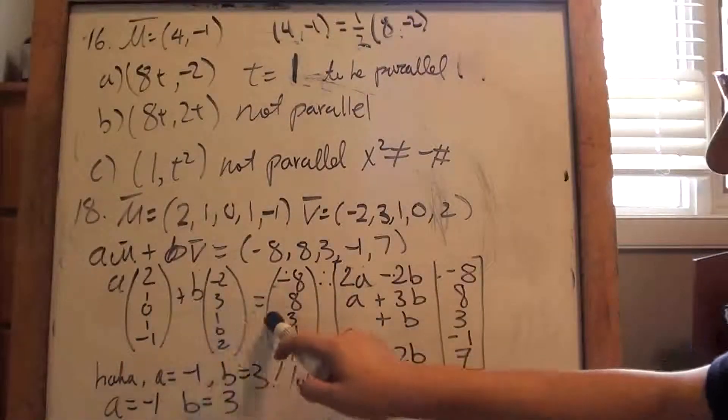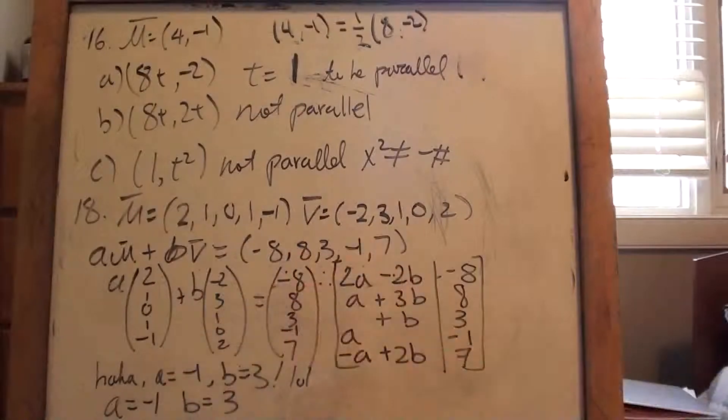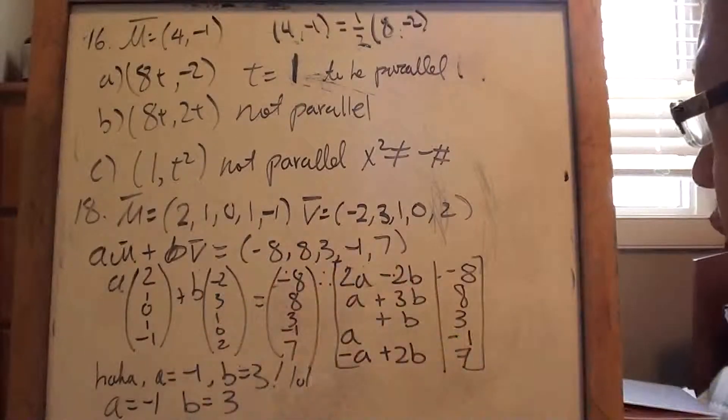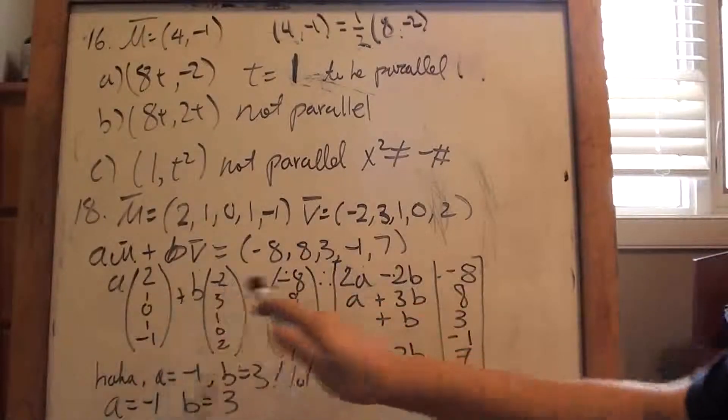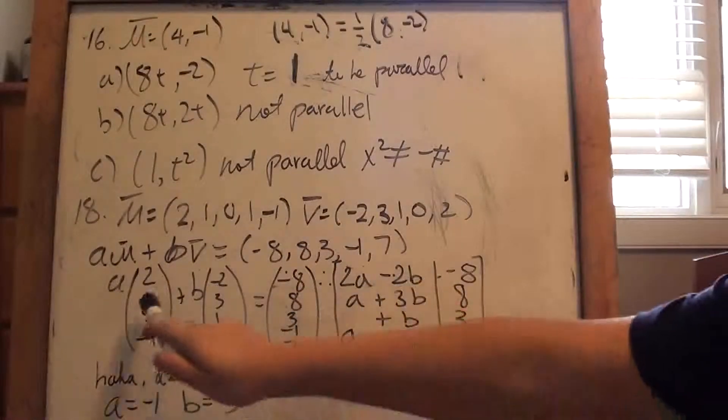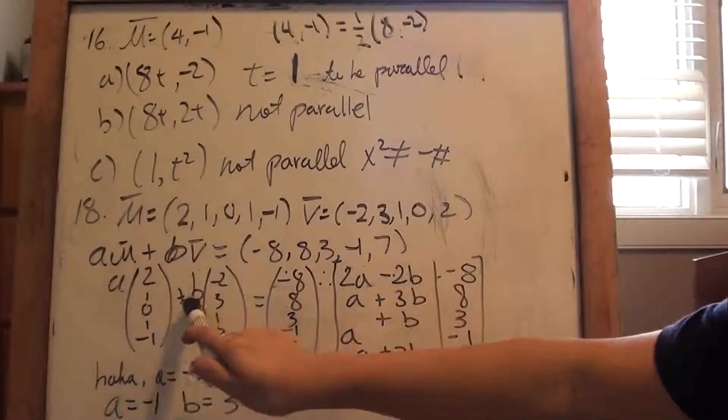Doesn't this look a little familiar? Matrixes. So, let's put that into augmented matrix format. So you have these, right? So, 2a plus negative 2b. So, and then just follow through. a plus 3b.